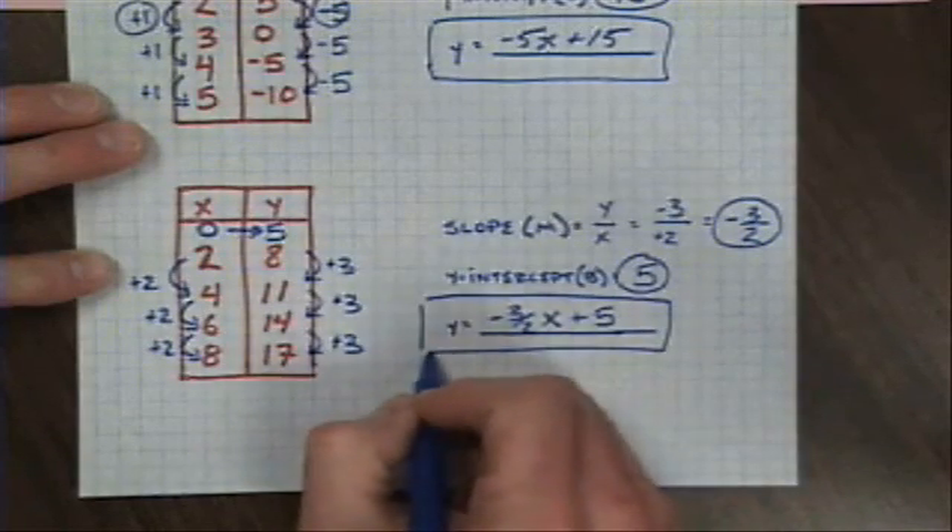Again, my equation then is going to be negative 3 halves. There's my x, and I'm going to add on my y intercept for my linear equation.